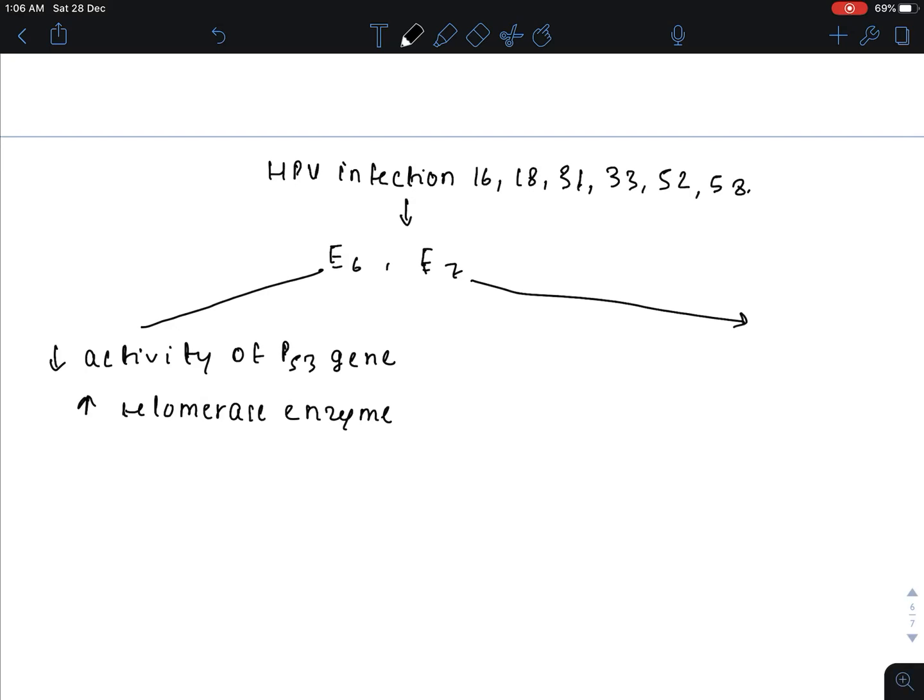E7 protein decreases the RB gene. Therefore apoptosis will not occur and hence both of them will cause cancer. There will be increased chance of cancer.